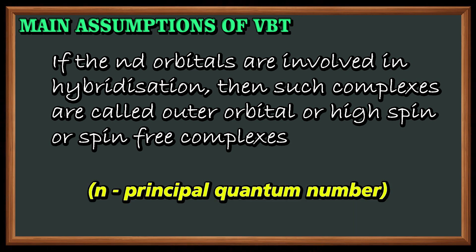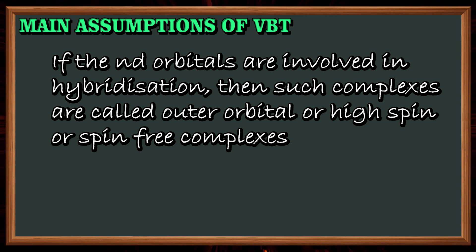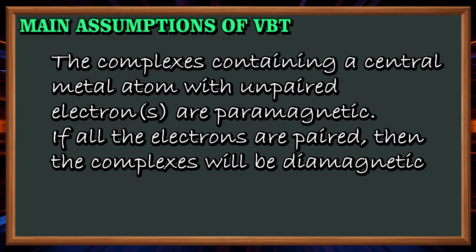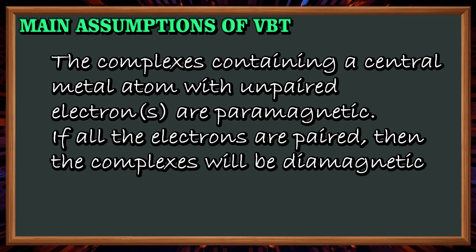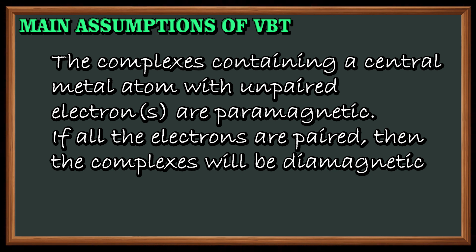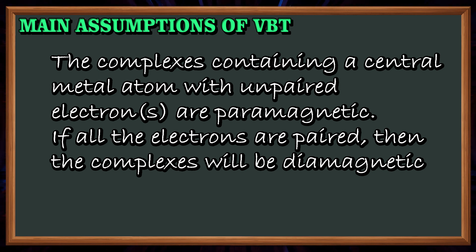Here n represents the principal quantum number of the outermost shell. Complexes containing a central metal atom with unpaired electrons are paramagnetic. If all the electrons are paired, then the complex will be diamagnetic.